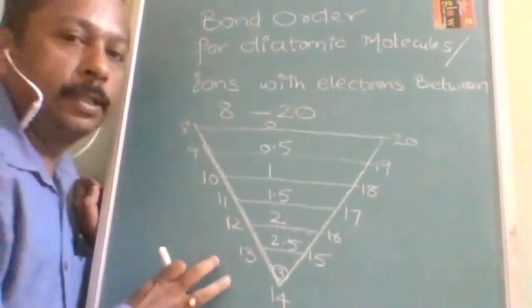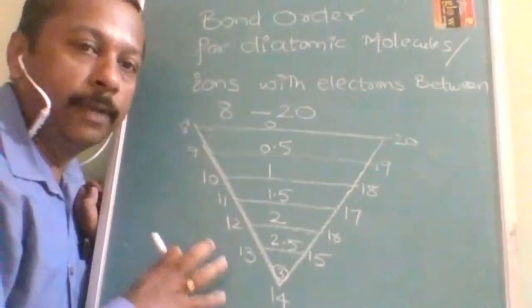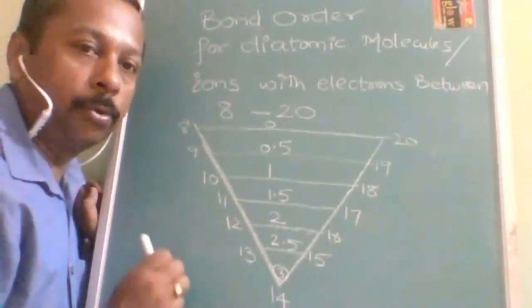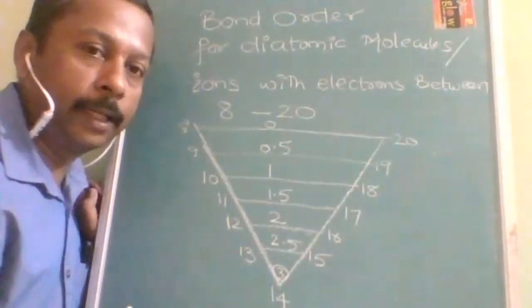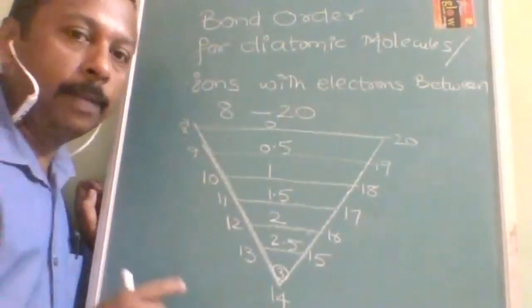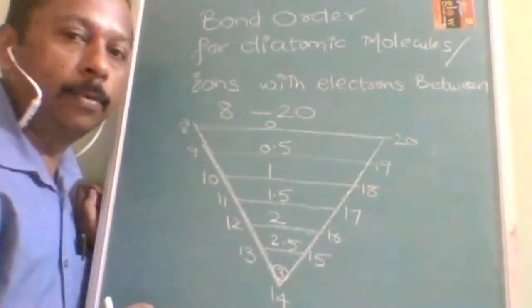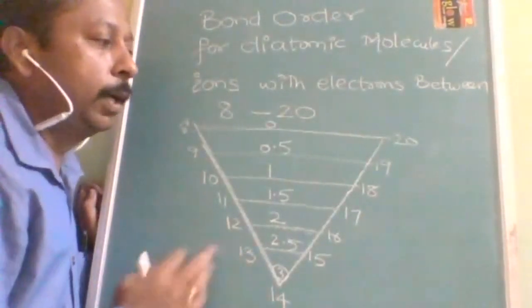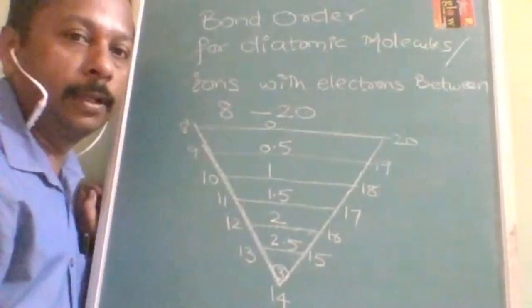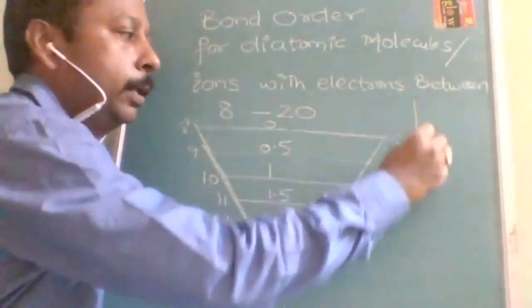So this is the magic diagram which is going to be very, very helpful to you to score good marks in the bond order section within a fraction of seconds, not even minutes. I am telling you in a fraction of seconds you will be able to solve. OK, so what does it mean and how to utilize this? For that I am going to take one example.